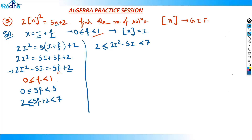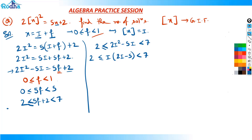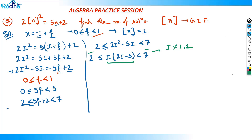I can take i out: i(2i minus 5) must be less than 7 and greater than or equal to 2. Since i is an integer, I cannot put i as 1 because 1 times (2 minus 5) is minus 3, which is negative — not in the range 2 to 7. Similarly, I cannot put i as 2 because 2 times (4 minus 5) is minus 2, also negative.